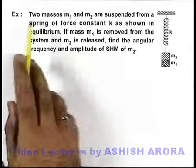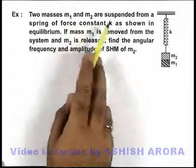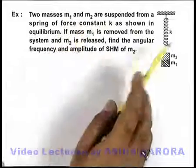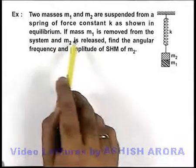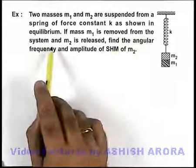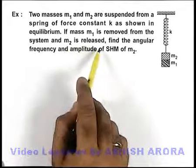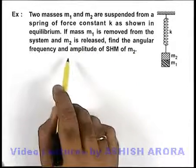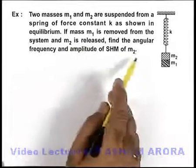In this example, two masses m1 and m2 are suspended from a spring of force constant k as shown in equilibrium. If mass m1 is removed from the system and m2 is released, we are required to find the angular frequency and amplitude of SHM of m2.